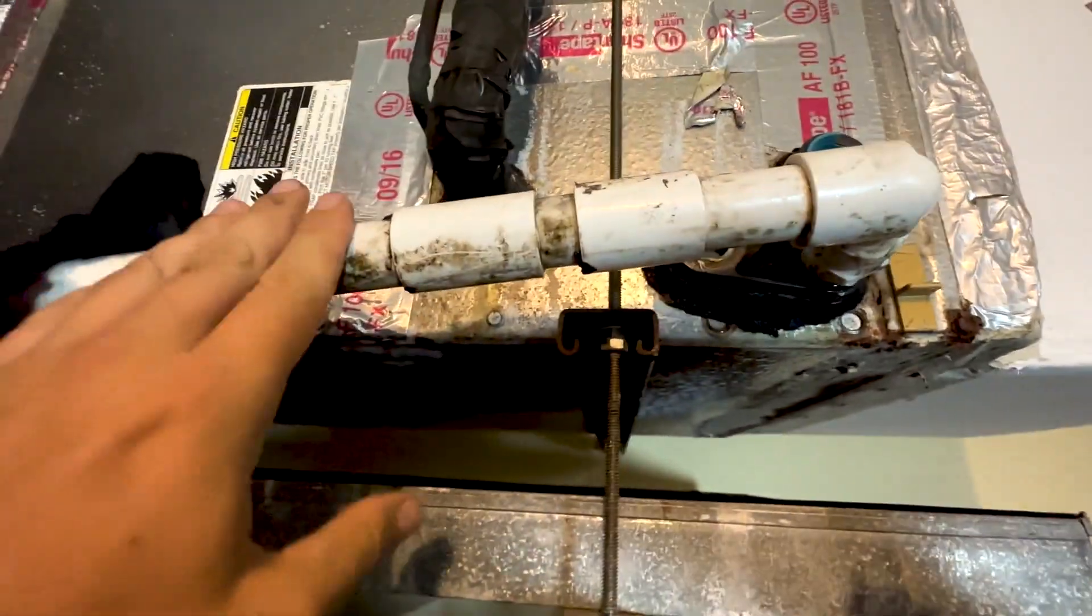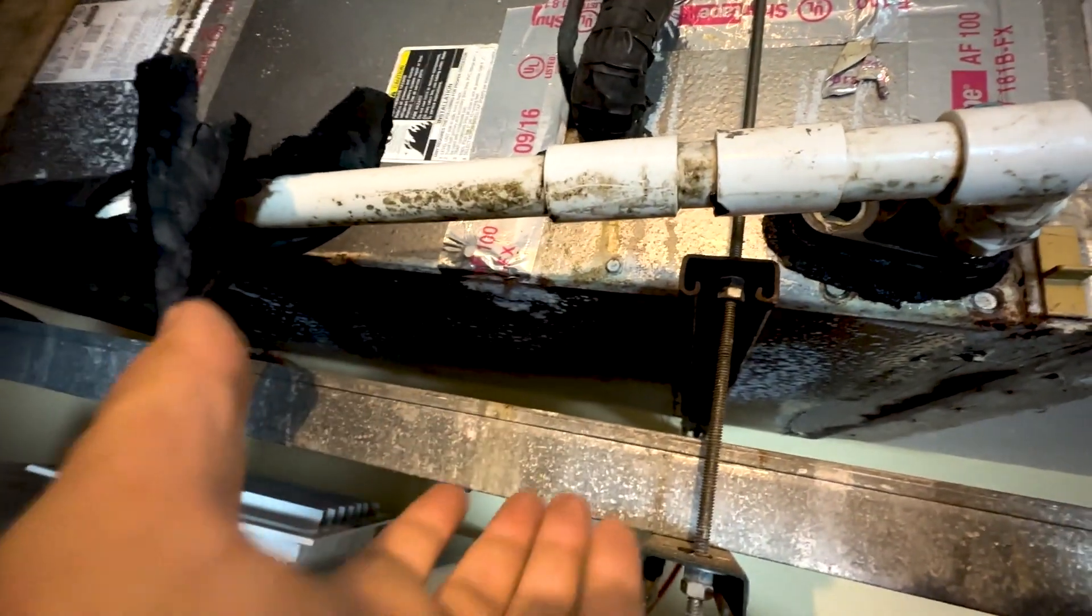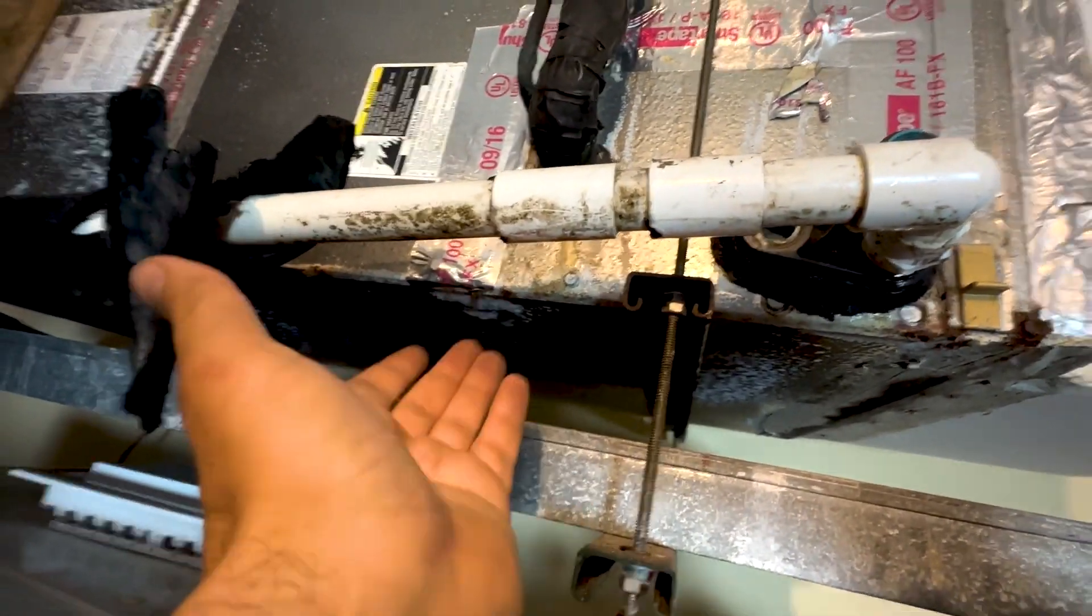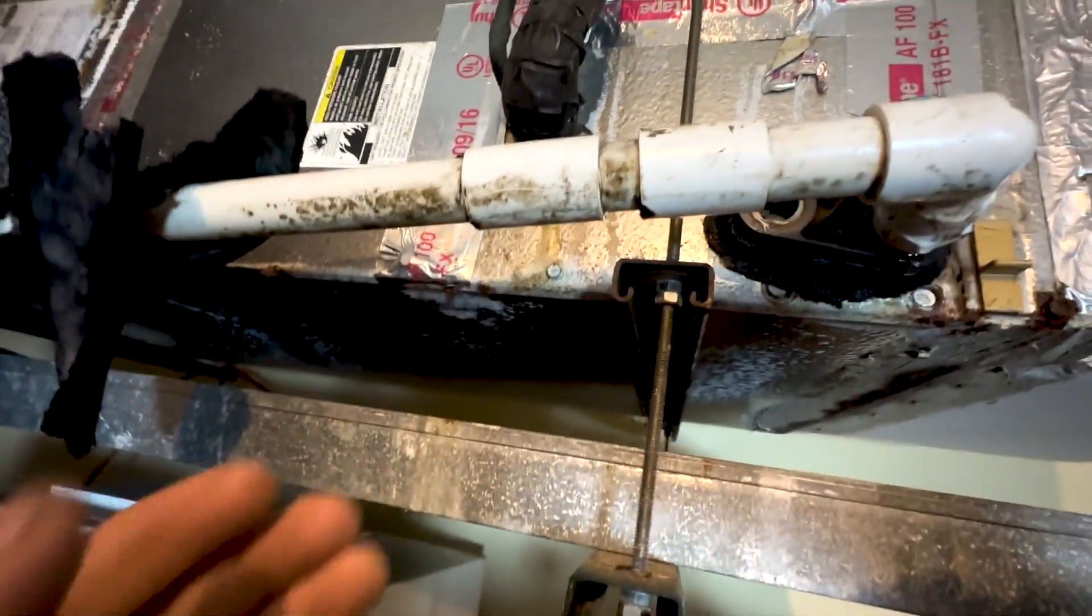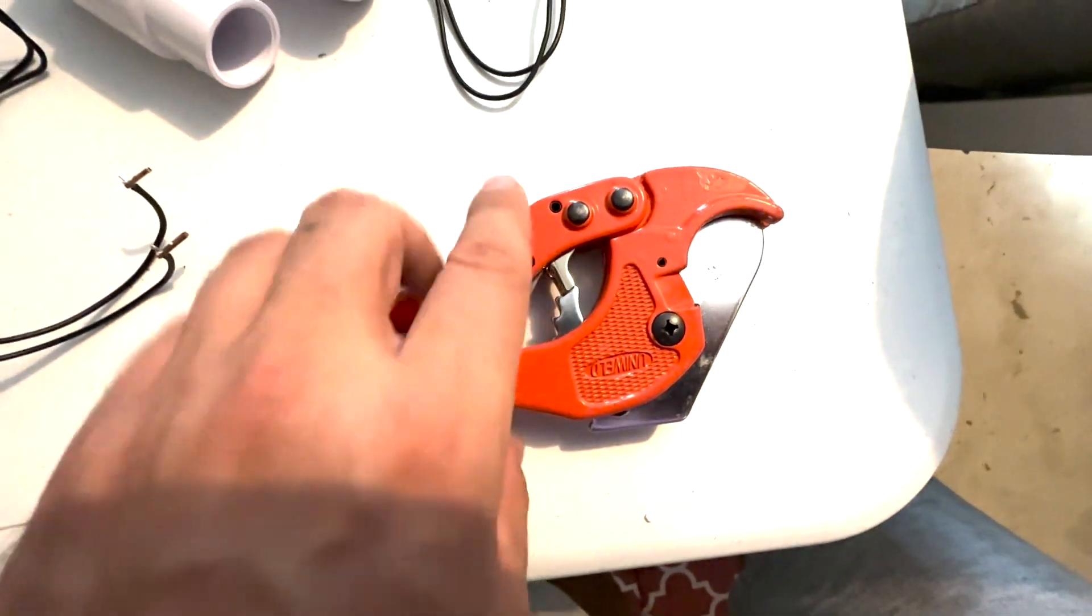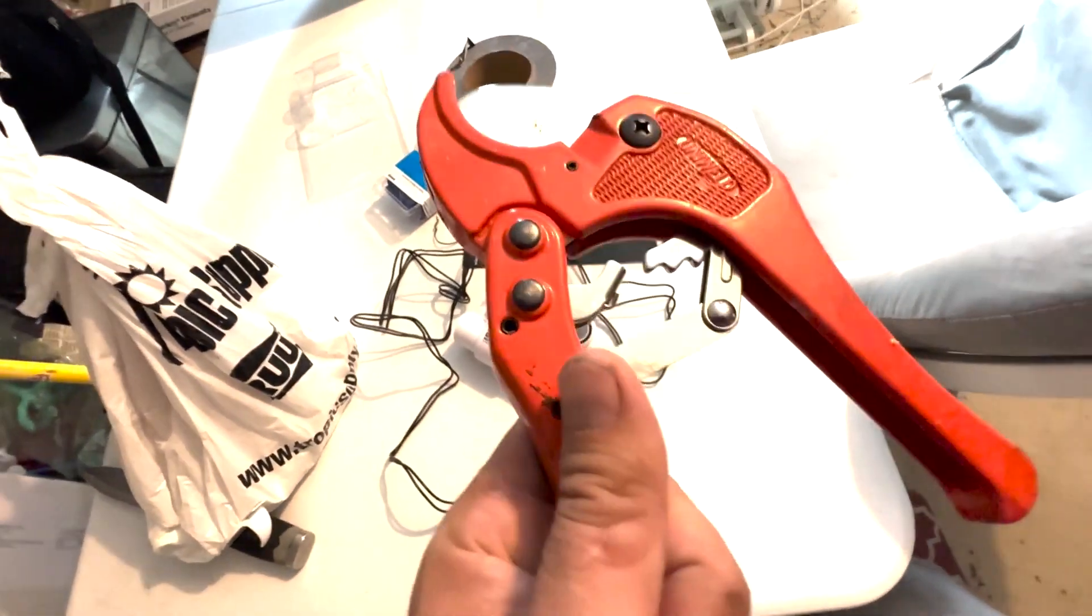All right, so the first thing that we can do is go ahead and cut this drain line. Anytime you cut the drain line, have something underneath it, a Tupperware or something to catch possible water just pouring out of that thing. Here's our PVC cutters. I actually need some new ones. They don't cut great, but this will be in the description section or something comparable.